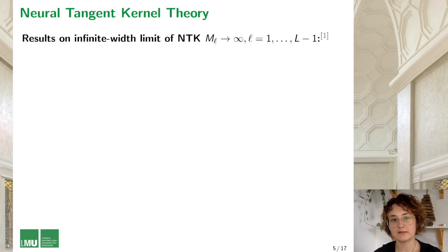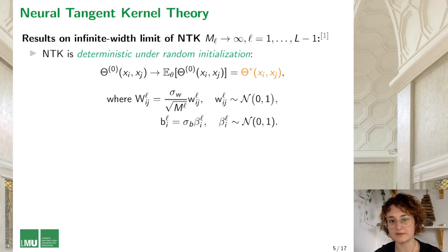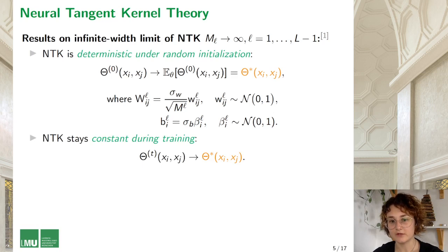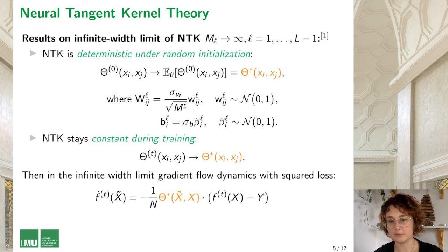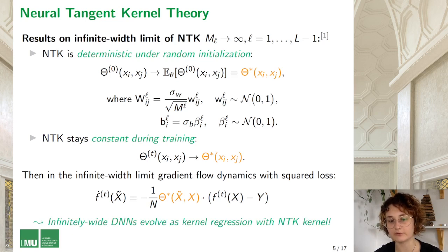What is interesting about the NTK is the results on its infinite width limit, where the widths of all the hidden layers are taken to infinity. The first result is that the NTK is deterministic under random initialization, where the variances of the initial parameters are scaled by the widths of the network. We can denote the deterministic version of the NTK as theta star. The second result is that the NTK stays constant during training, so it's equal to its initial value theta star. These two results allow us to dramatically simplify the dynamics, and the gradient flow equation becomes a matrix ODE with a constant matrix theta star. This equation has an analytical solution, identical to the dynamics of kernel regression with the kernel given by theta star. We conclude that infinitely wide deep neural networks evolve as kernel regression.